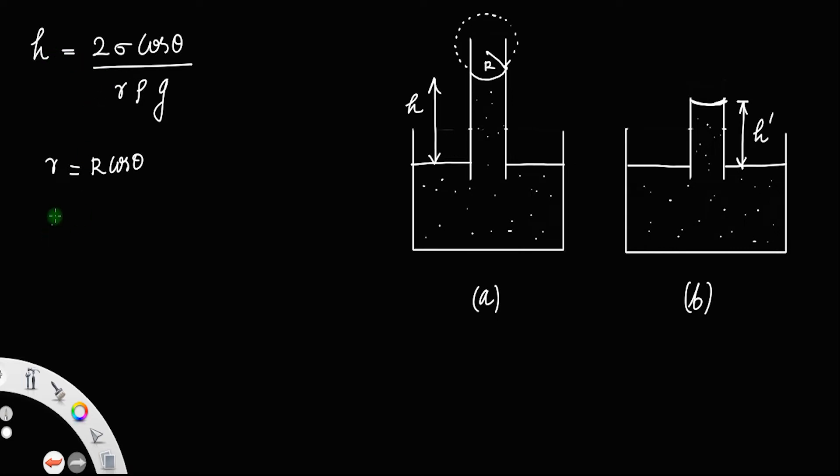If you substitute this value into equation 1, we have h equals 2σ cos θ divided by R cos θ ρg, so you can cancel cos θ.